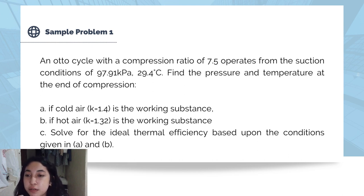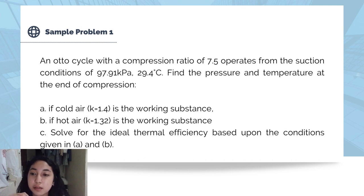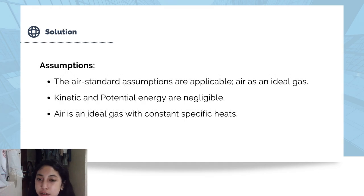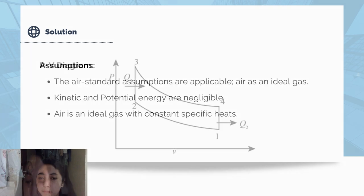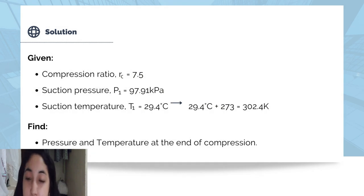An Otto cycle with a compression ratio of 7.5 operates from suction conditions of 97.91 kilopascals at 29.4 degrees Celsius. Find the pressure and temperature at the end of compression: A) if cold air is the working substance, B) if hot air is the working substance, and C) solve for the ideal thermal efficiency based upon the conditions given in A and B. Before proceeding, we declare the assumptions: air standard assumptions are applicable, air is an ideal gas, kinetic and potential energy are negligible, and air is an ideal gas with constant specific heats.